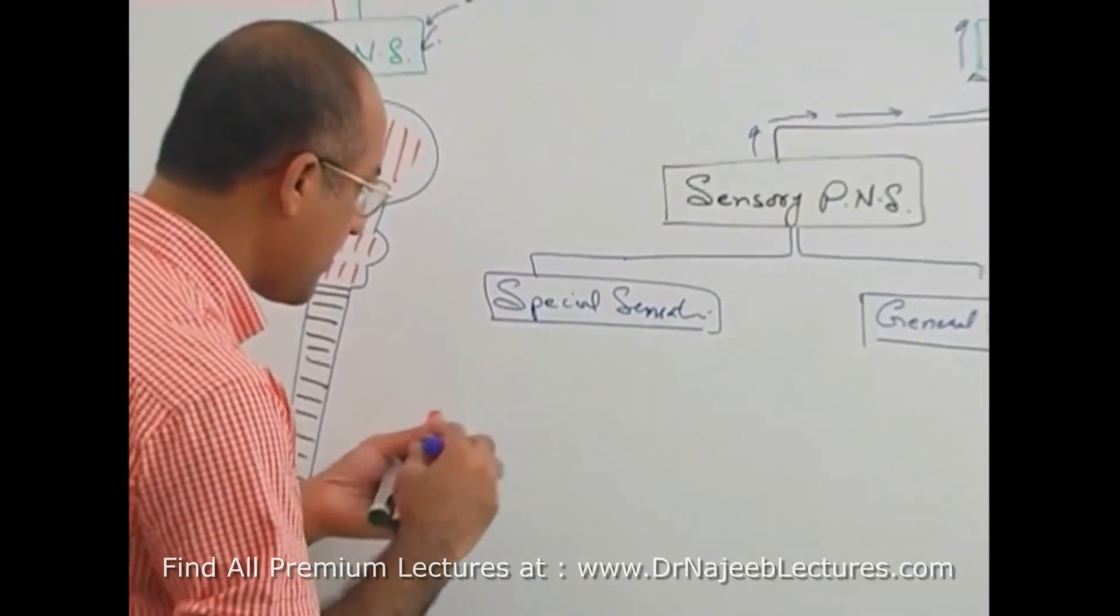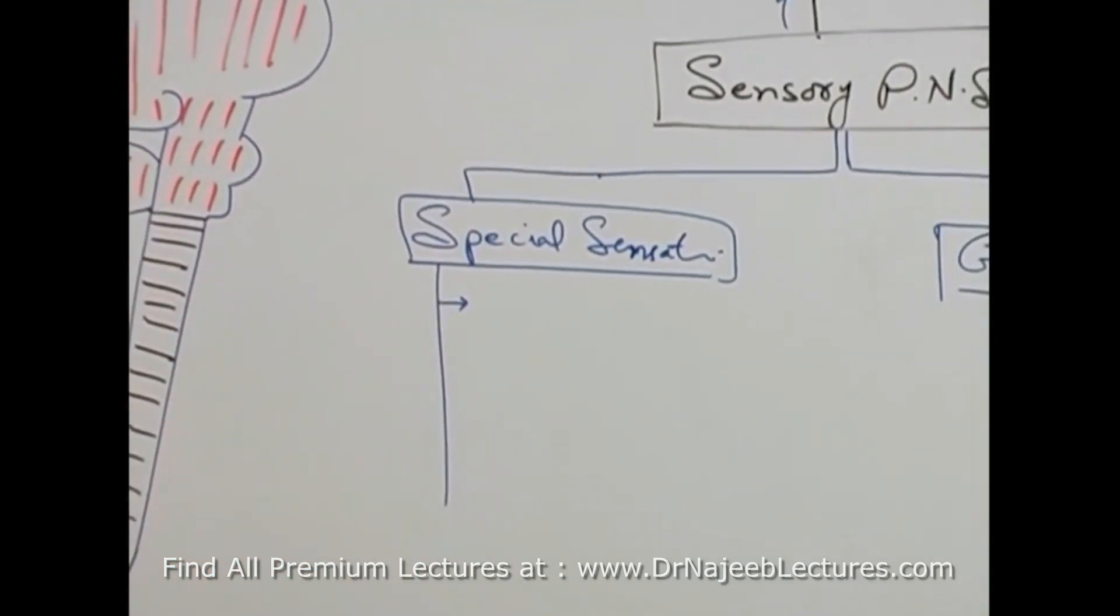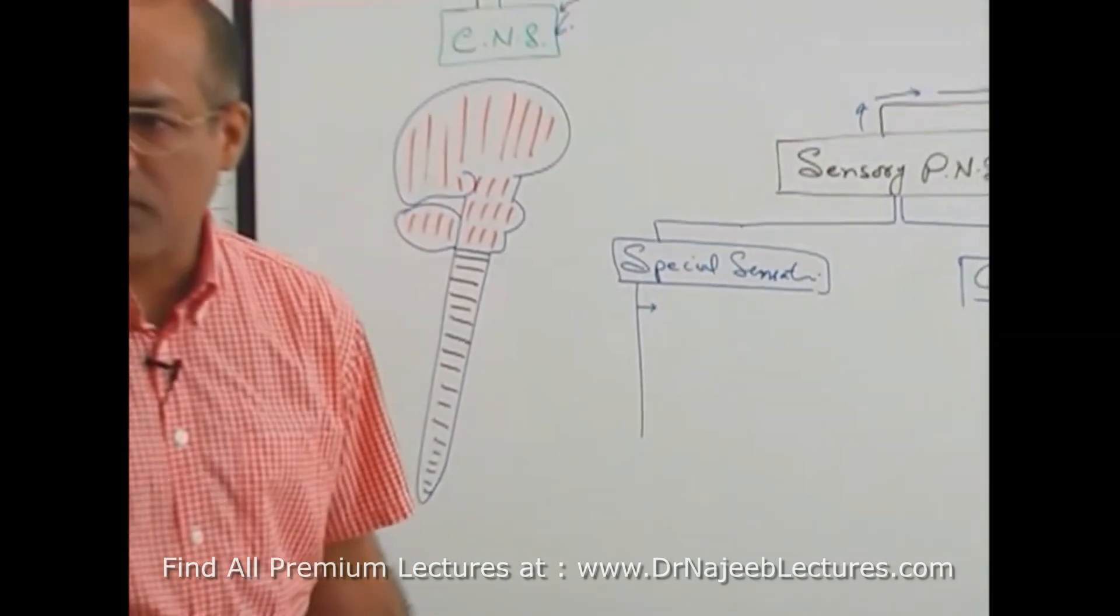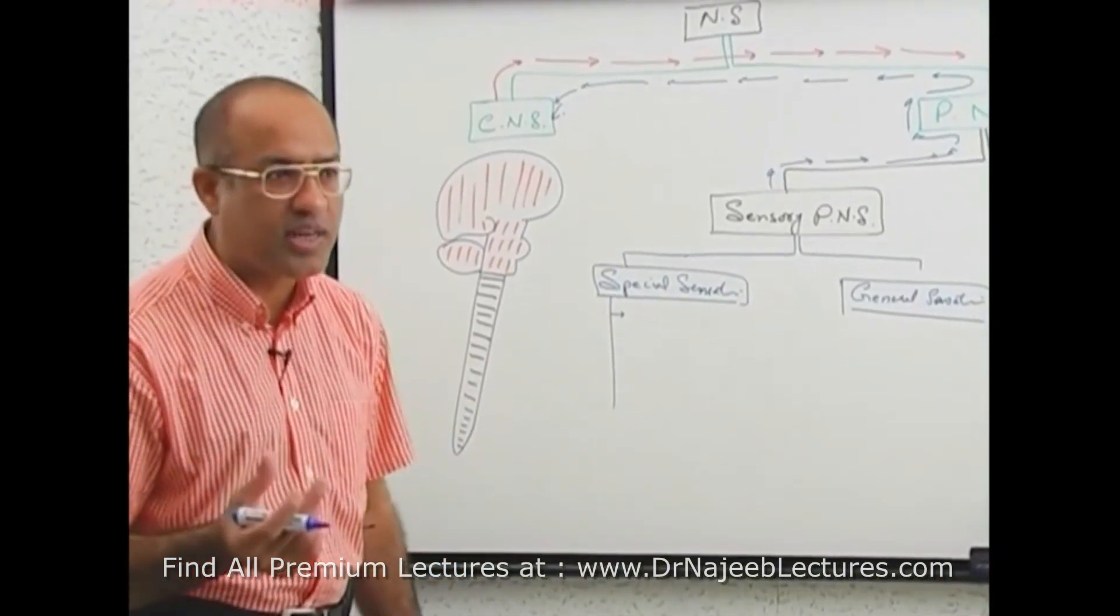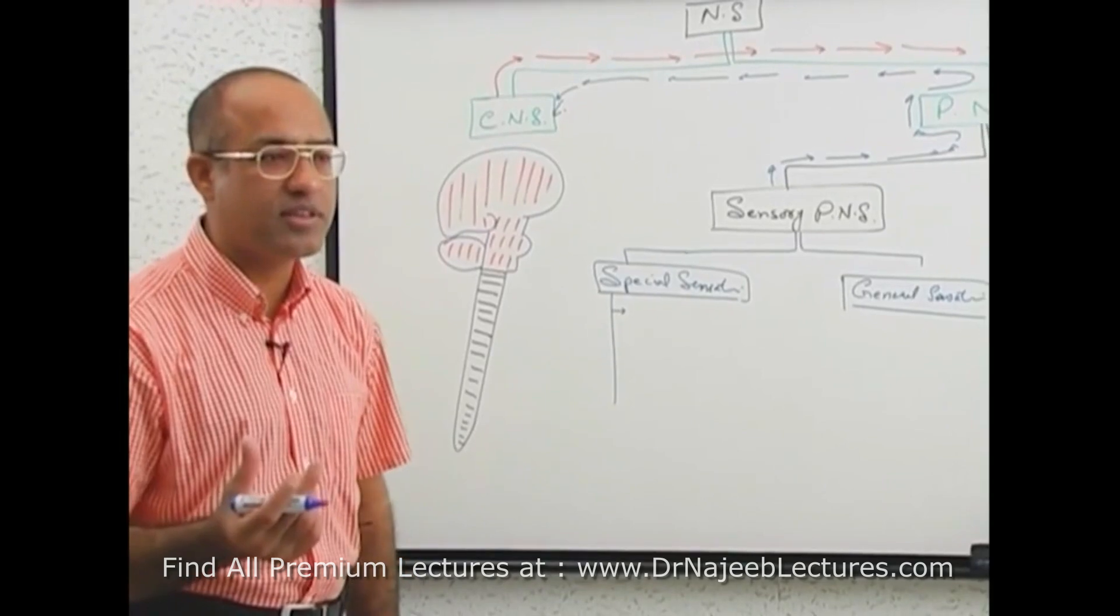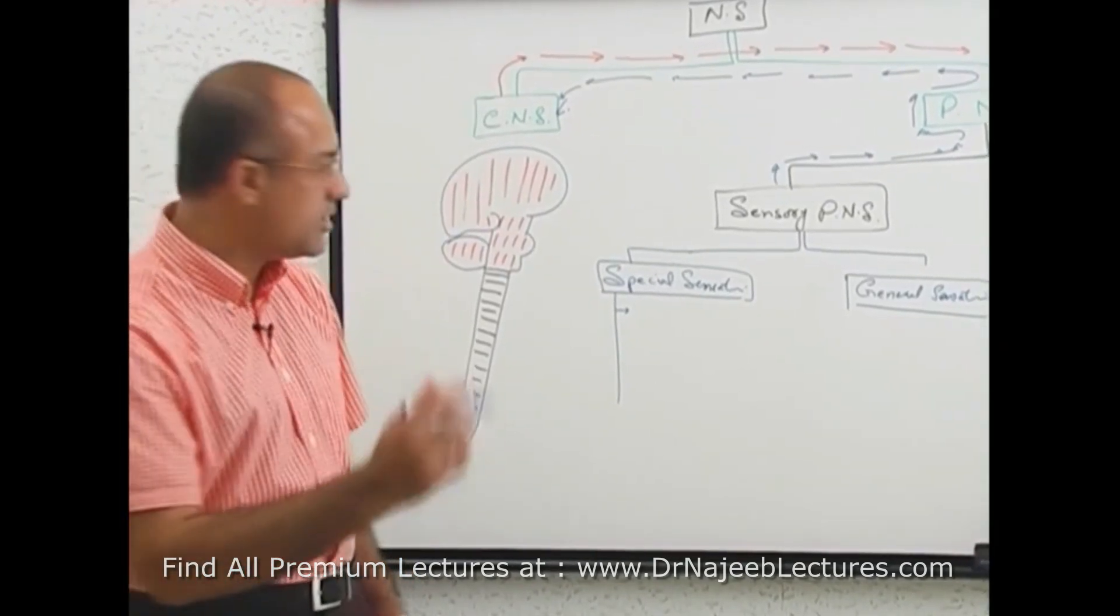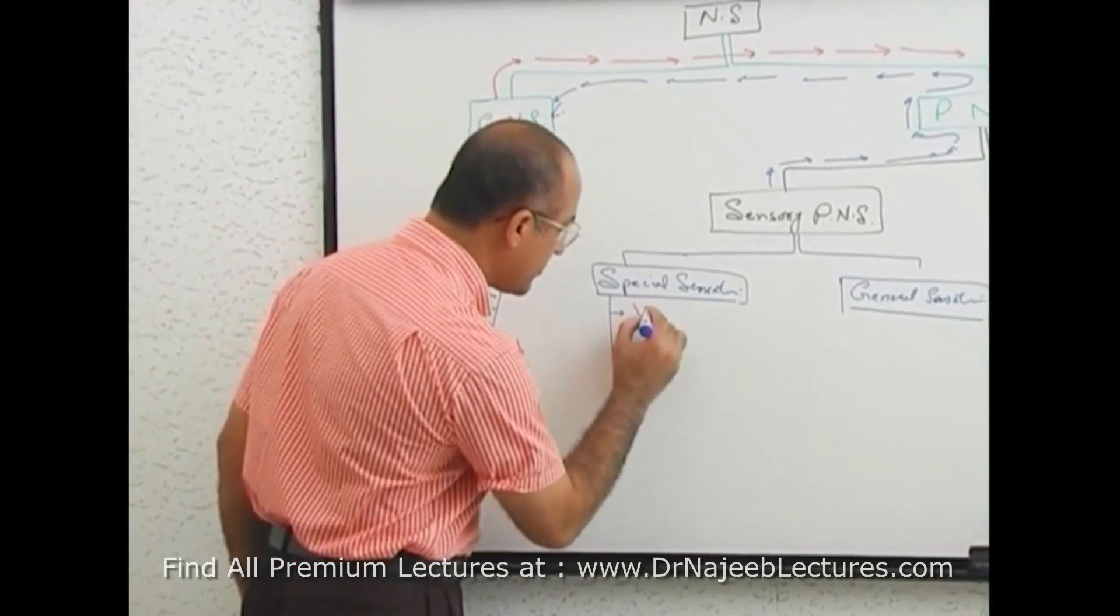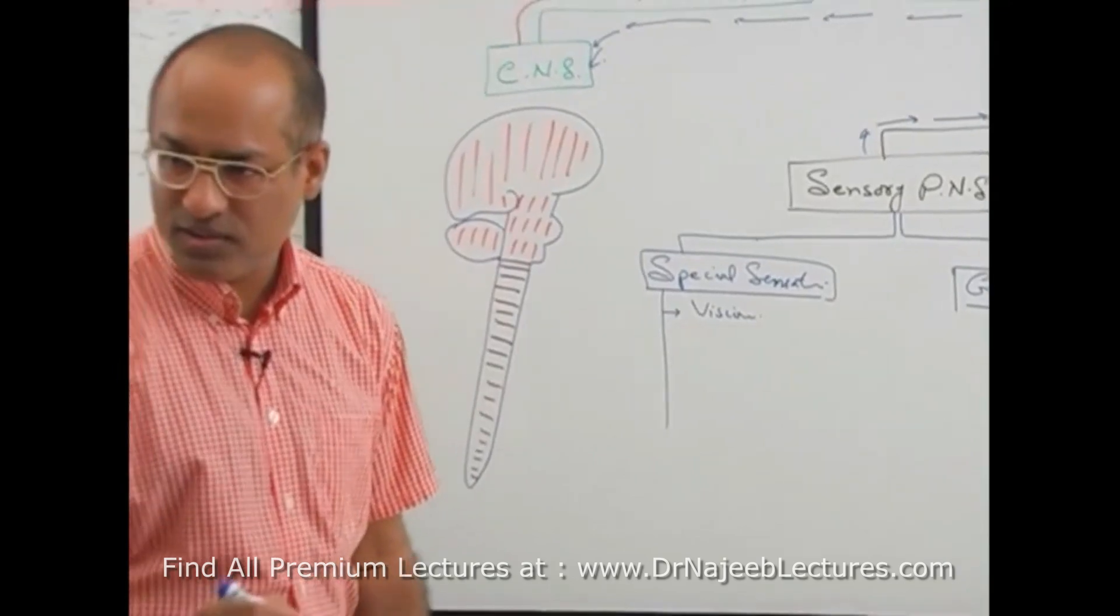We can say special senses are senses which cannot be elicited or sensed through multiple parts of the body or from most parts of the body. Special senses can be elicited by specialized, designed receptor systems which are present in only some specific parts of the body. For example, vision. Sense of vision is only from eyes.